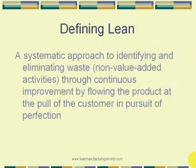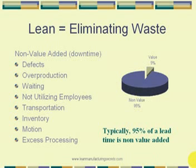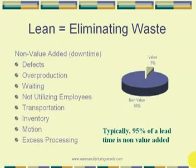Lean equals eliminating waste, and there are eight deadly wastes — all non-value-added things that can be causes of downtime. Let's look at these eight: defects, overproduction, waiting, not utilizing employees, transportation, inventory, motion, and excess processing. Waiting is one of the most obvious — you can see someone standing around waiting for parts, a person, equipment, or the forklift driver. Waiting is the easiest waste to see right away.